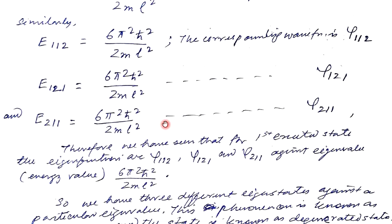For a particular energy state, the wave functions must have different structures for different quantum states. Here we have combinations of nx, ny, nz, and for each set of quantum numbers we have different energy states, some of which are degenerate. The first excited state is a degenerate state with 3-fold degeneracy. If we obtain n different eigenfunctions against a particular energy state, that is called n-fold degeneracy.